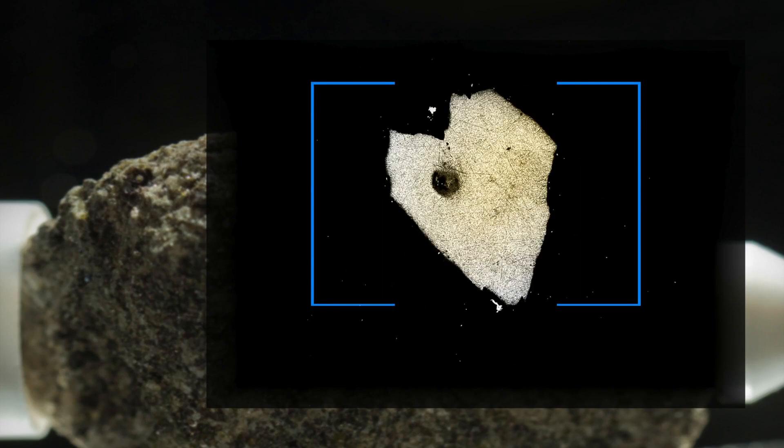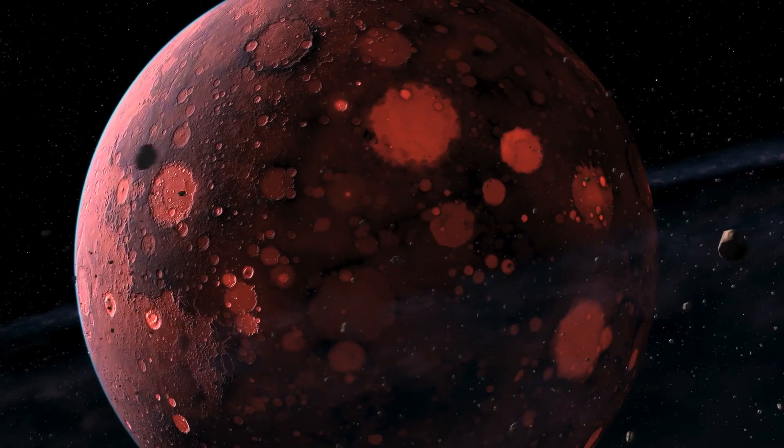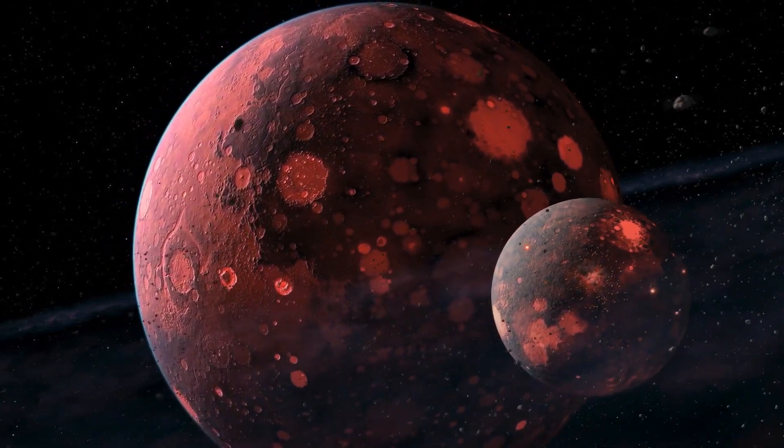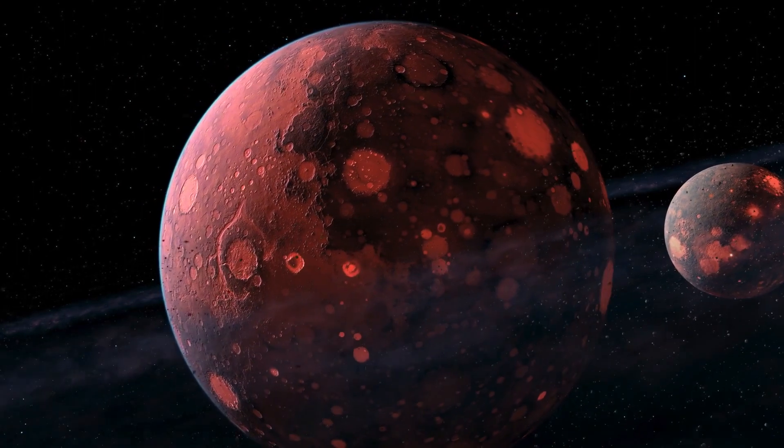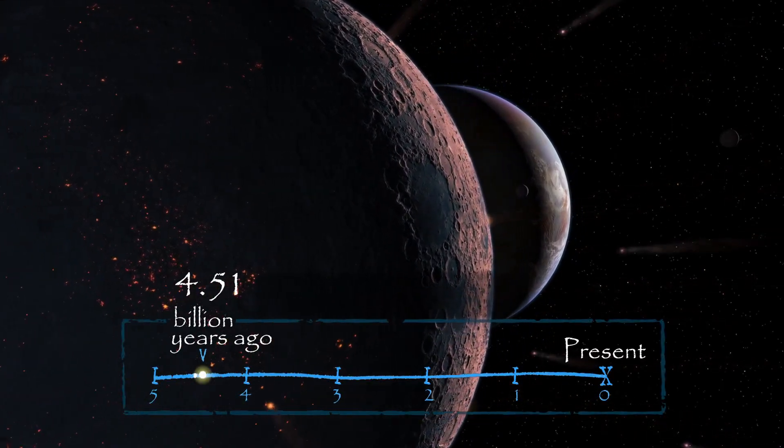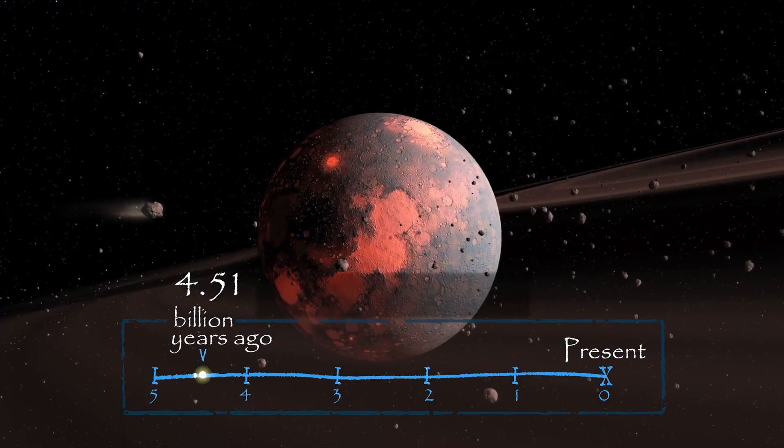Those zircons are very important because we know they crystallize in this lunar magma ocean. They are one of these old pieces of the moon that we are looking for, one of these old pieces that we can use to date the origin of the moon. Zircons not only give the age of the moon, they set a specific date for the collision. The age of the moon is 4.51 billion years old. 4.51 billion years ago, Theia becomes part of Earth and forms the moon.